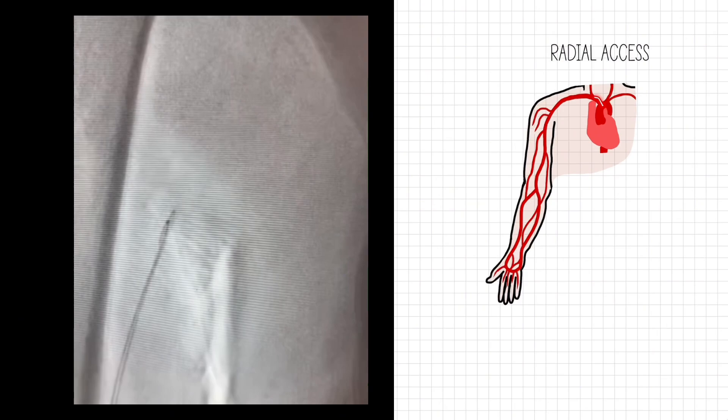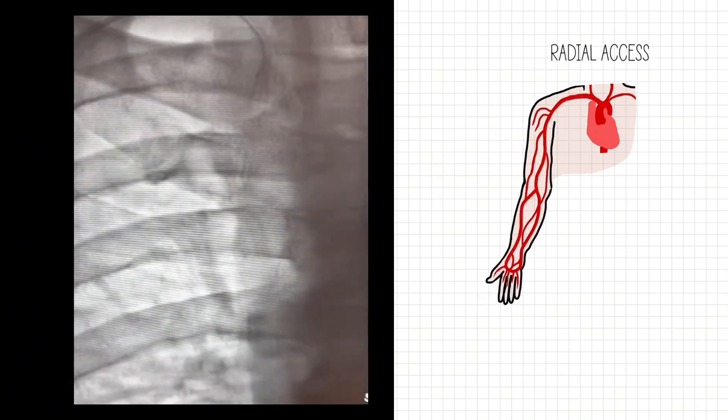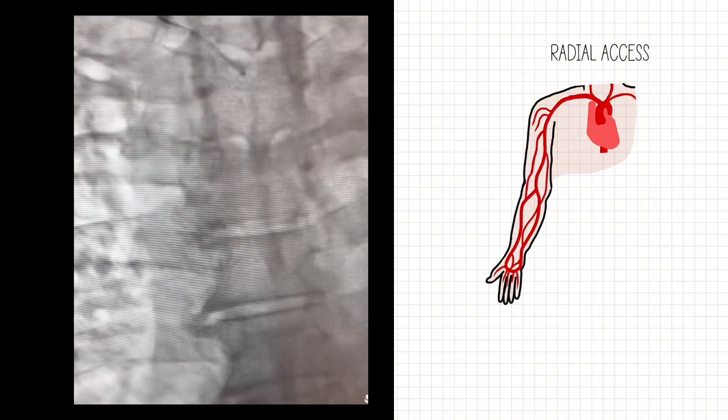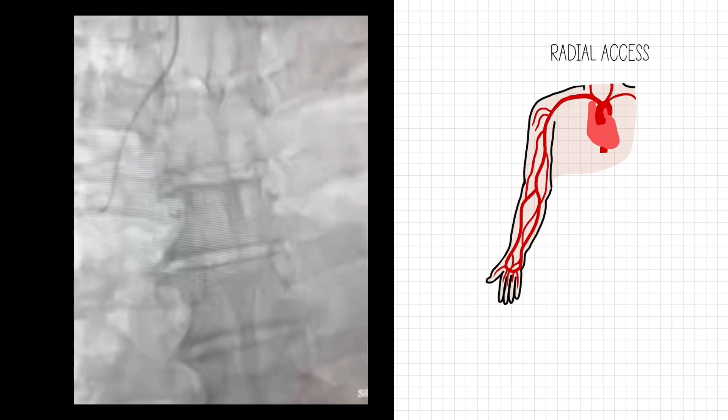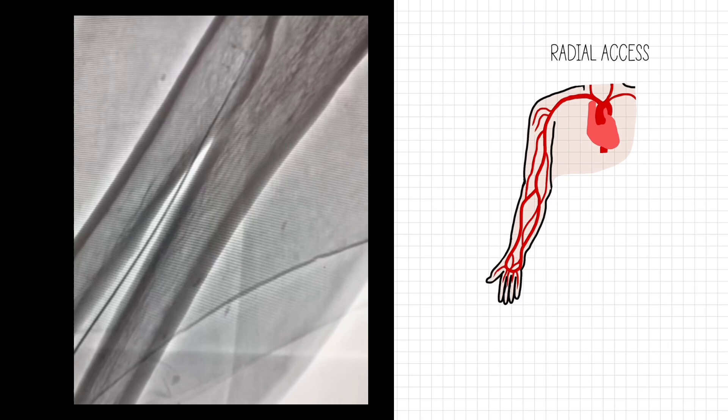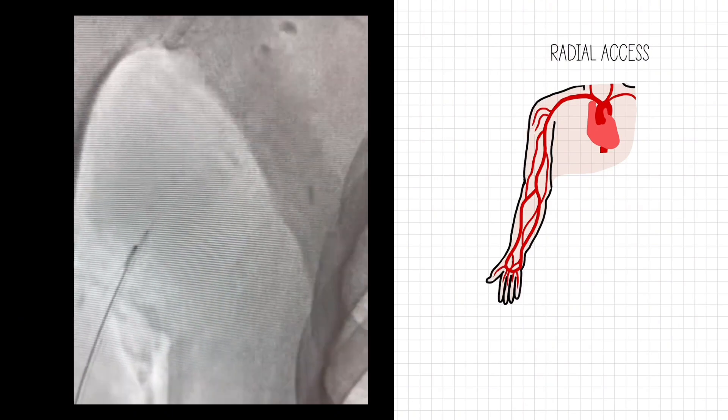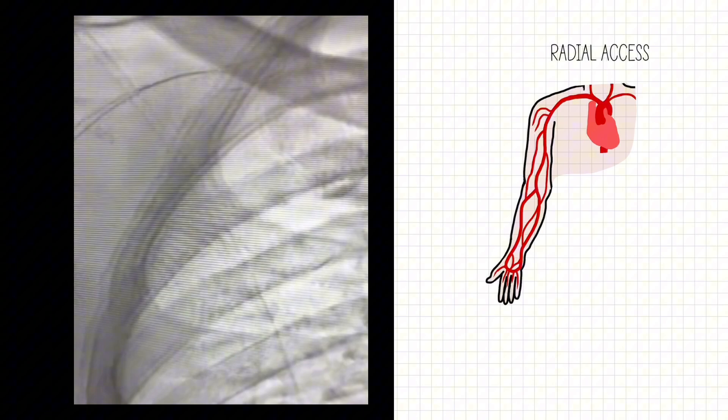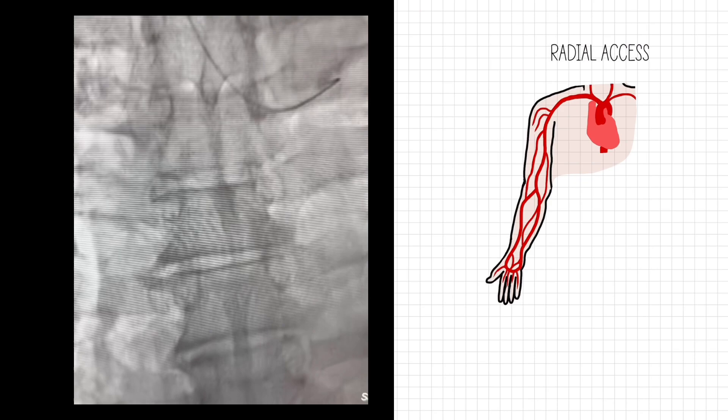We could have a dissection, a tear in any of these vessels because we passed through them. Anytime you're introducing equipment into the body, you have that risk. You also have the thrombus risk. You could have a stroke from a thrombus because once you put foreign objects in the body, the body attacks it, tries to aggregate platelets, and you have that thrombus development.